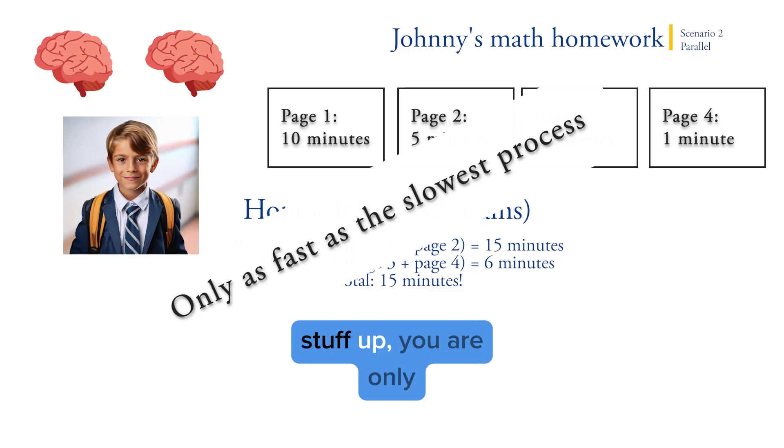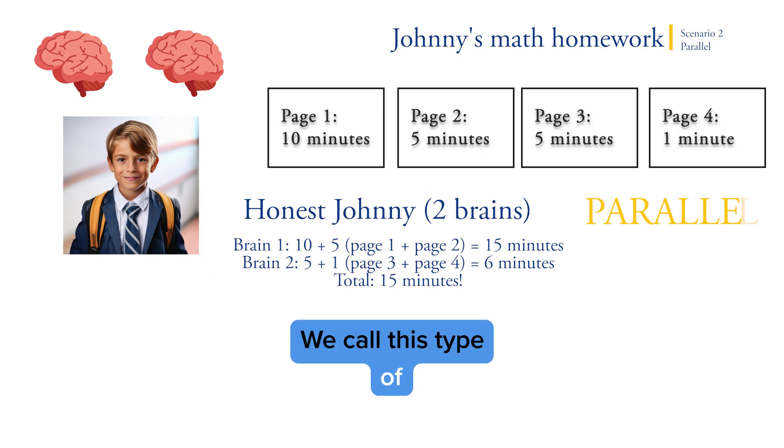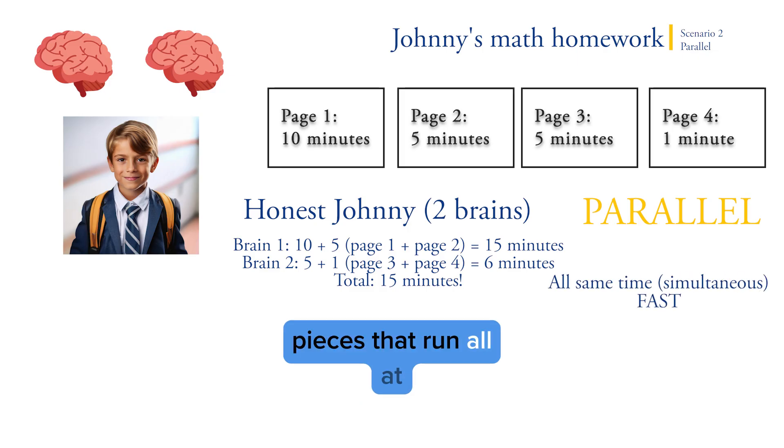We call this type of processing parallel, which means things get split up into pieces that run all at the same time. This is generally a fast way of doing things. Parallel is fast. And when we do things in parallel, it means they're getting done simultaneously or at the same time.